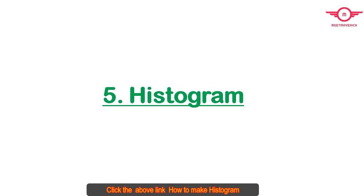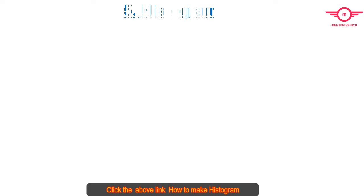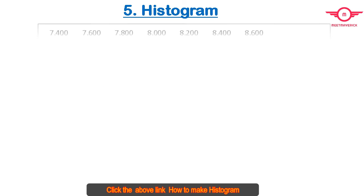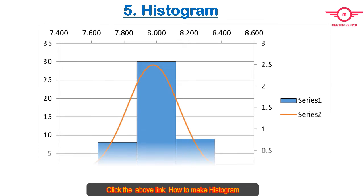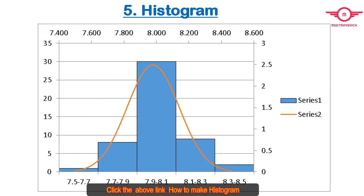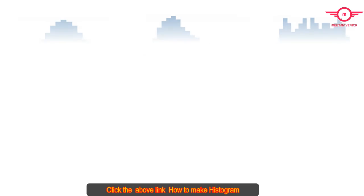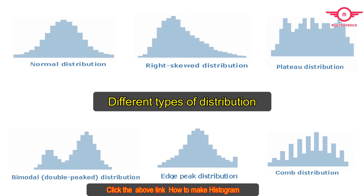The Histogram can help you represent the frequency distribution of data clearly and concisely among different groups of a sample. The histogram is also used to understand the factors or data that repeat more often.